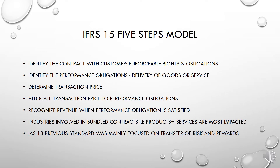The third step is the determination of the transaction price — the consideration that the customer will be paying to the business against the receipt of goods and services. The fourth step is to allocate the determined transaction price to the individual performance obligations built into the contract identified at step one. For example, the contract might involve the provision of after-sale services after the sale of any goods. The fifth step is to recognize revenue upon delivery of individual performance obligations involved in the contract.